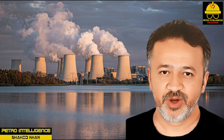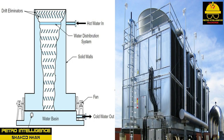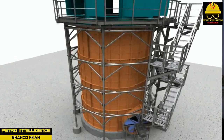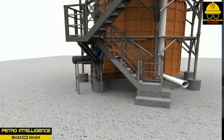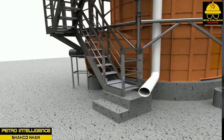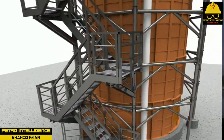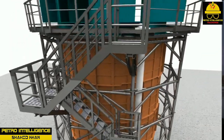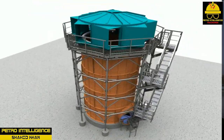Force draft cooling tower: force draft cooling towers force air in mechanically by the use of fans on the lower side of the tower. Force draft towers usually have solid sides without louvers. The fans push in 100% of the process air. Flow direction is counterflow — the fans push air upward against the downward flow of water.